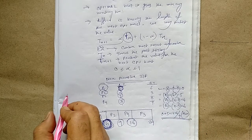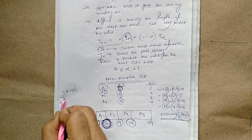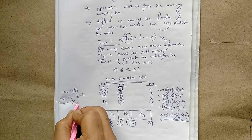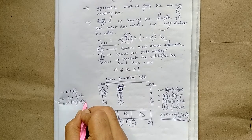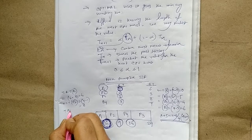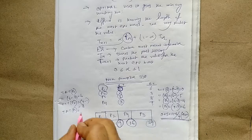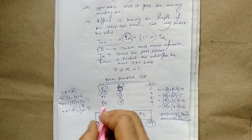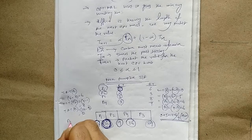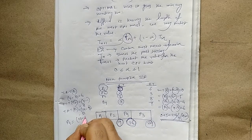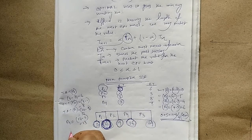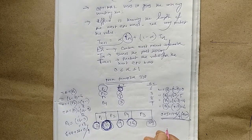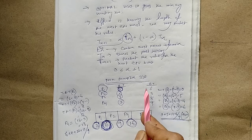Turnaround times: P1 = 6 − 0 = 6; P2 = 9 − 1 = 8; P3 = 24 − 2 = 22; P4 = 16 − 3 = 13. Average turnaround time = (6 + 8 + 22 + 13) / 4 = 12.25 seconds. This concludes the Non-preemptive SJF example.